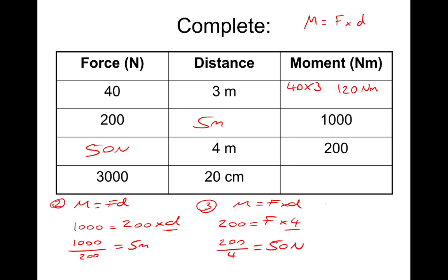Last one, straightforward, number 4. So our moment is force times distance, FD. So the force on this one is 3,000 multiplied by a distance. And this distance is given in centimeters, so we need to convert that into meters, divide by 100. So it would be 3,000 multiplied by 0.2 meters. So that will give us a moment of 600 Newton meters. Relatively straightforward then.